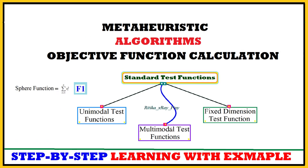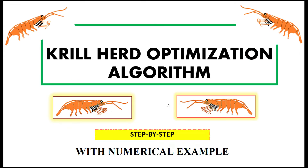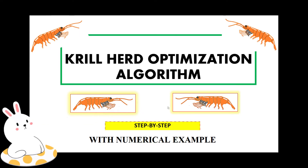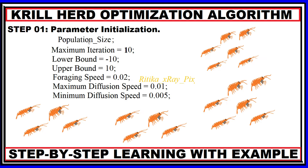In this video we will try to understand how we can calculate the objective function values for any metaheuristic algorithm — specifically the Krill Herd Optimization algorithm that we already discussed in previous videos. The first step is the parameter initialization phase, where we will initialize all the important parameters.